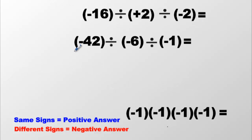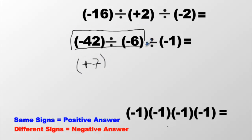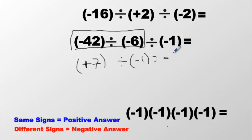We've got another three-number problem. We'll do two at a time, starting with the first pair. A negative number divided by a negative number is a positive number. Forty-two divided by six is seven, so this entire thing becomes positive seven. Now it says positive seven divided by negative one — the signs are different, so we write negative. Seven divided by one is seven, and we get negative seven.